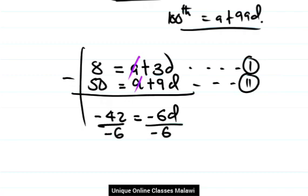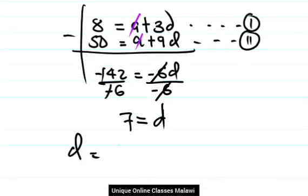So negative 6 and negative 6 cancel, remaining on this side d. And for the two, 6 goes into 42 seven times. The negatives cancel because a negative divided by a negative is positive. So d equals 7.